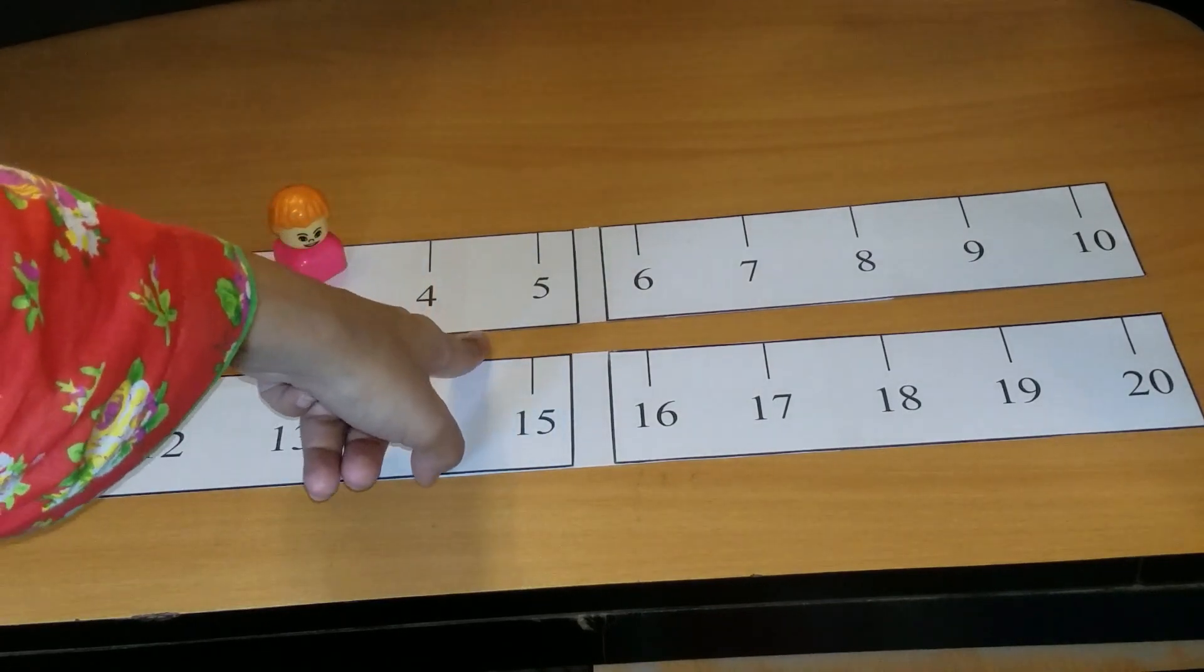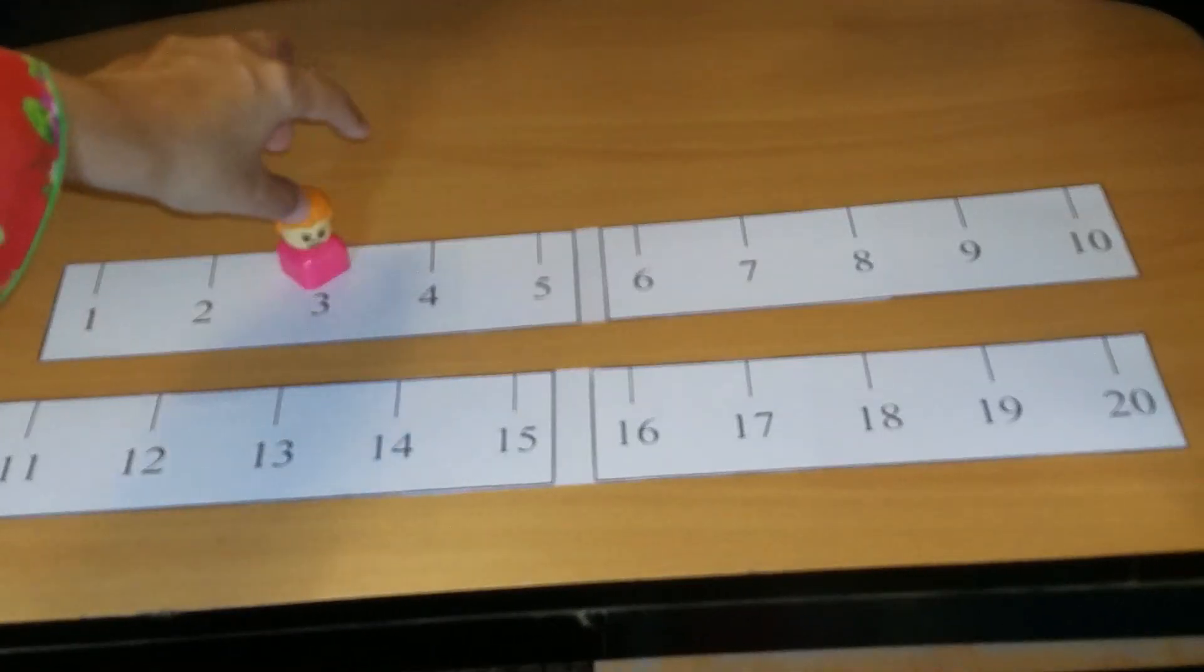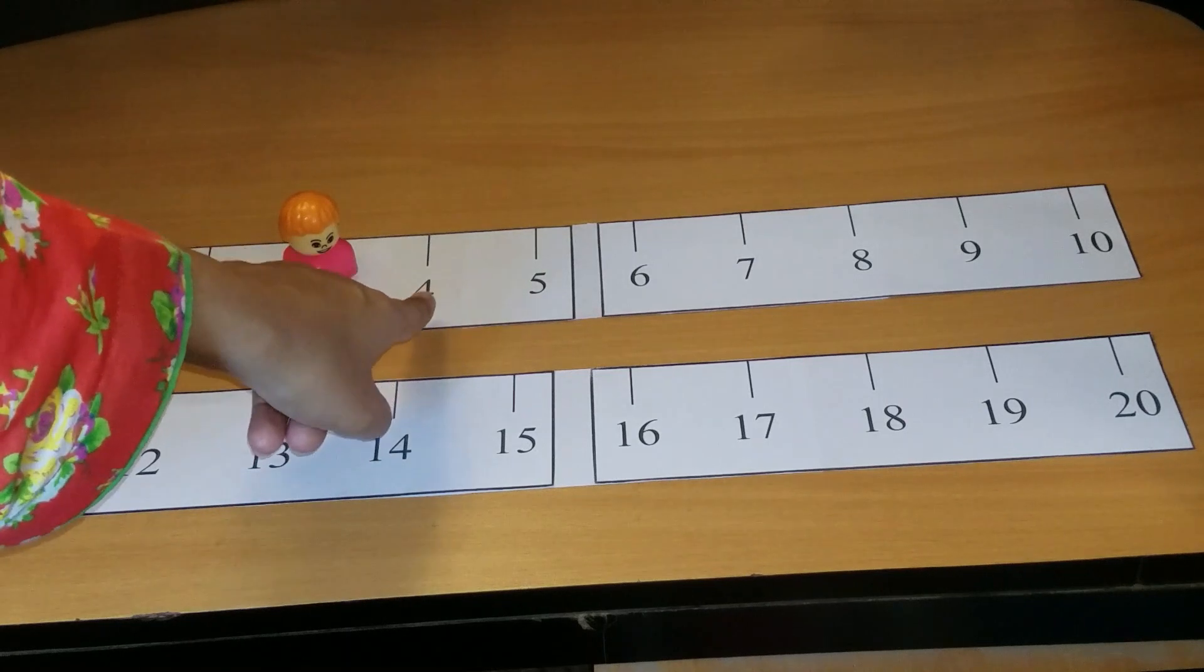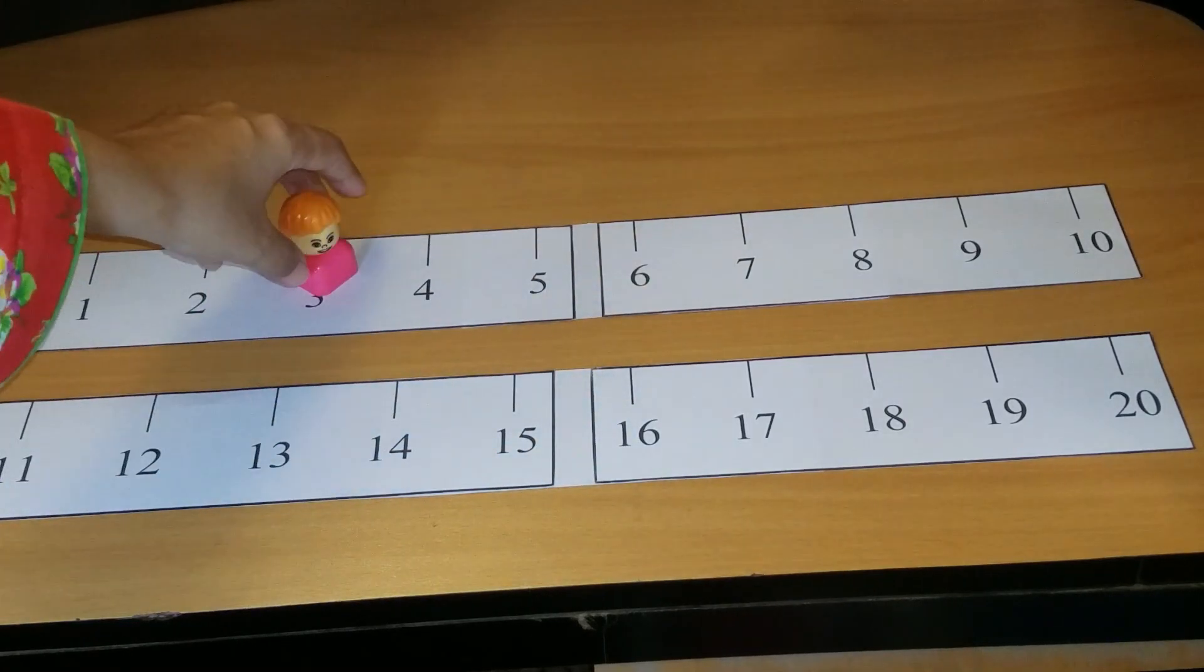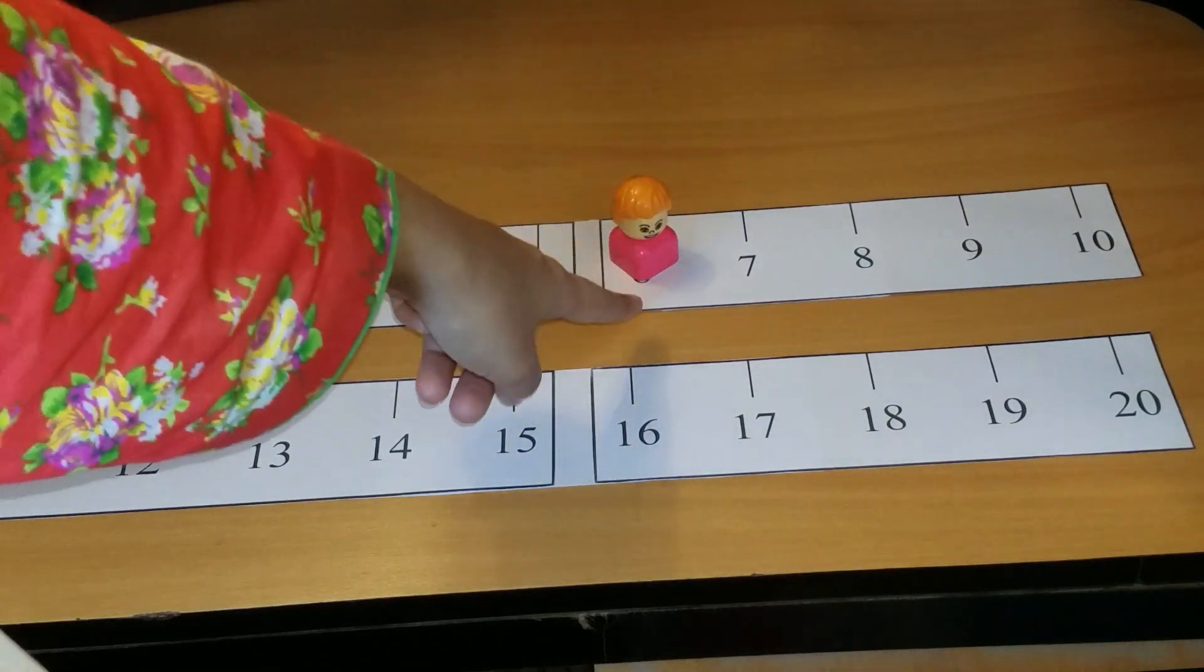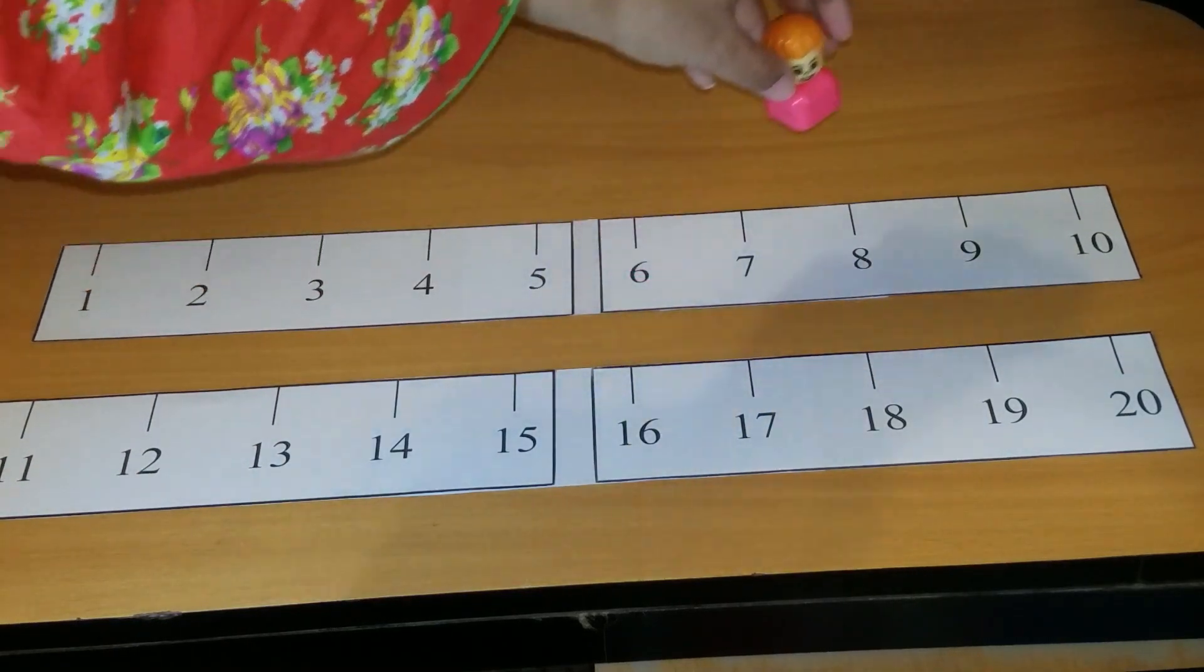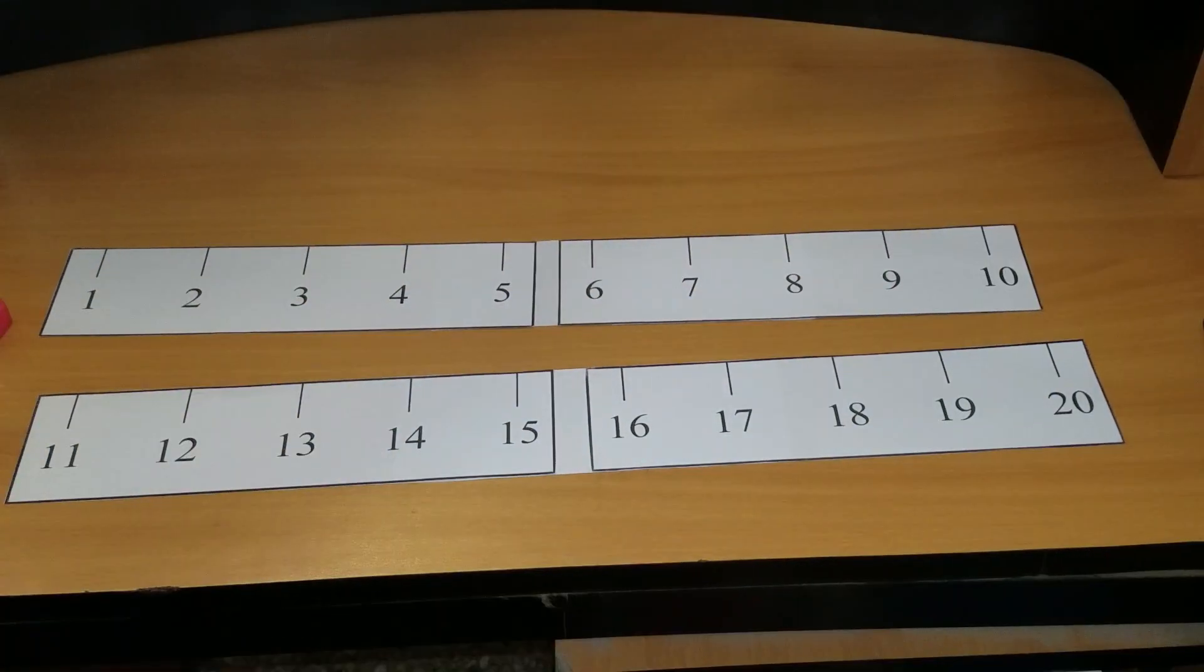So the toy will skip one, two, and the toy will jump on the third number, so it means that it's the number three. Again ask your child to skip two numbers and jump on the third number. So how he will count which is the third number? He will count like this: after three he will say one, two, three. So he has to jump on the number six like this.